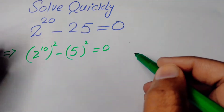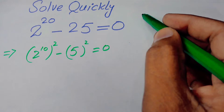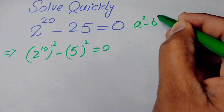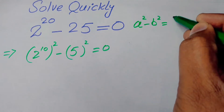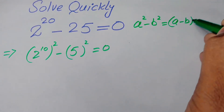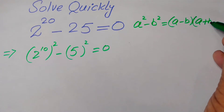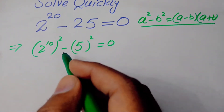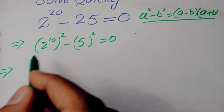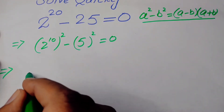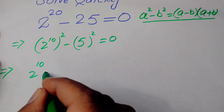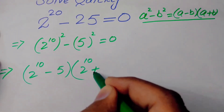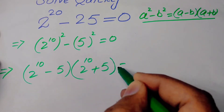After that we apply the famous identity: a squared minus b squared is equal to a minus b times a plus b. We apply this identity here and obtain the expression in the form: 2 to the power of 10 minus 5, times 2 to the power of 10 plus 5, equals 0.